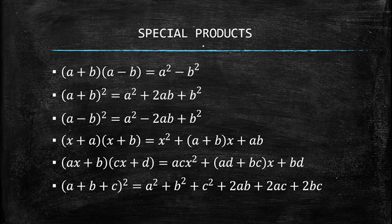The first special product is: the quantity of (a + b) times the quantity of (a − b) equals a² − b². Next, (a + b)² equals a² + 2ab + b². And (a − b)² equals a² − 2ab + b².